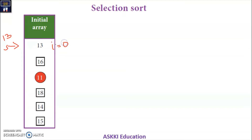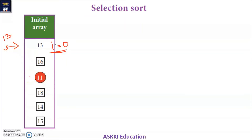For the element at position 0, in the 0th iteration, I is 0. S will compare the values and update to the smaller value. S is 13. Comparing 13 and 16: 13 is smaller, so we go to the next element. The next element is 11. Since 11 is less than 13, we update S. S no longer denotes 13. Now S value is 11. This is the smallest element found so far.